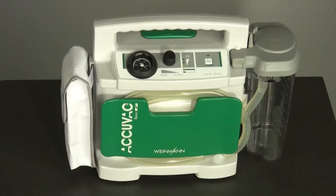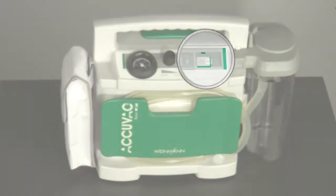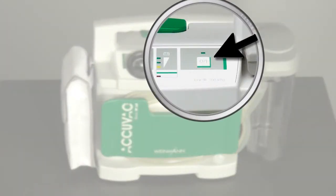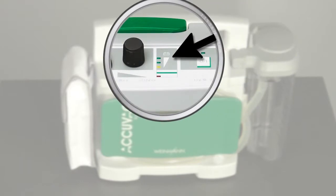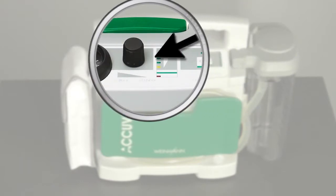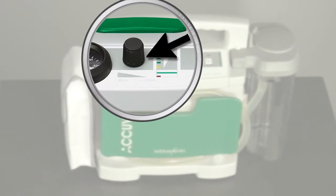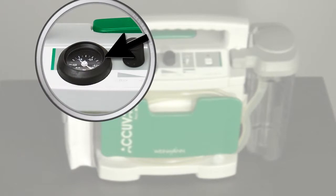All operating elements and displays are in the operating panel. The ACUVAC BASIC is turned completely on and off with the 01 key. To the left of the on-off switch is the voltage indicator. The required vacuum can be set with the vacuum control dial to the left of the voltage indicator. The vacuum setting can be read from the pressure gauge.